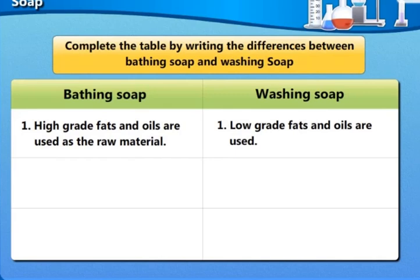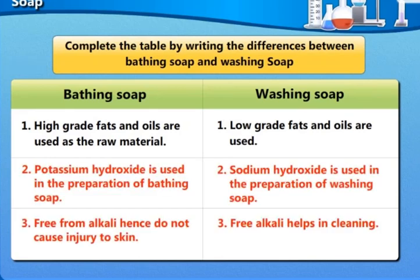Complete the table by writing the differences between bathing soap and washing soap. In bathing soap, we use high grade fats and oils, high quality fats and oils. And in bathing soap, potassium hydroxide is used, which is a little less stronger base. Whereas in washing soap, we use sodium hydroxide, which is a little stronger base.